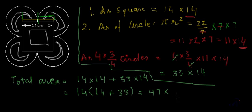And total area will be 47 multiplied by 14, which is actually equal to 658. So the total area of the figure will be 658 centimeter square.